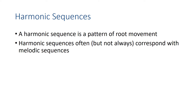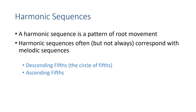The circle of fists is one example of a harmonic sequence, which is a pattern of root movements like the one we just heard. Those are the roots of the chords, and it is a particular pattern. Harmonic sequences sometimes but not always correspond with some type of melodic sequence. Here are the main sequences we're going to talk about: descending fifths or the circle of fifths, ascending fifths, the down three up four pattern, the down four up two pattern, and parallel 6-3 chords. We'll look at these one at a time.